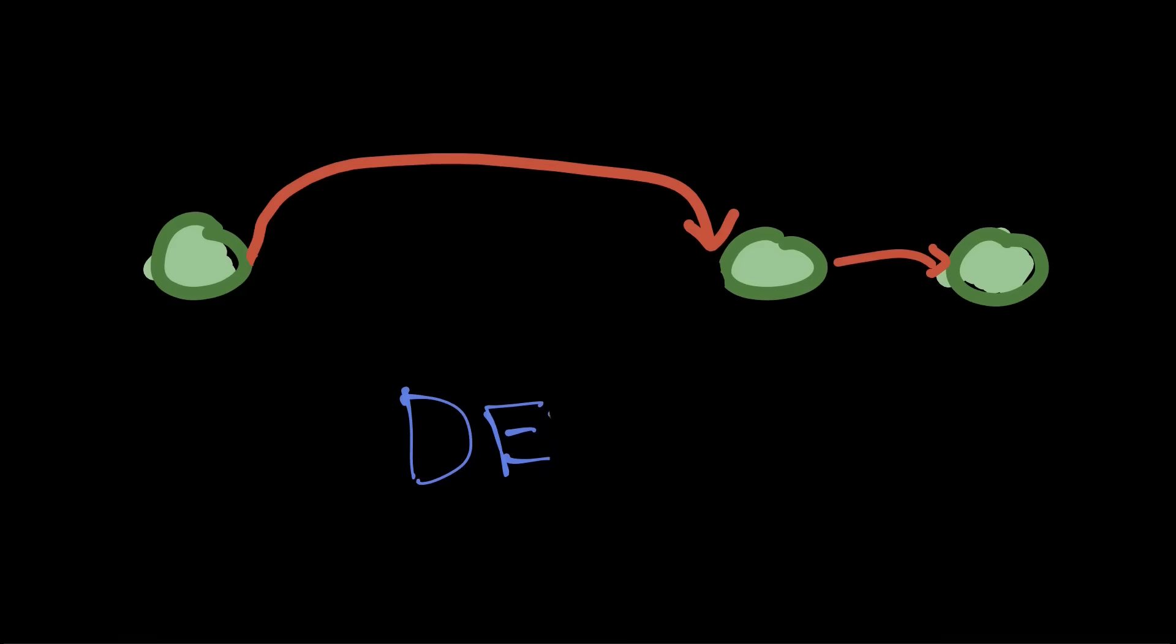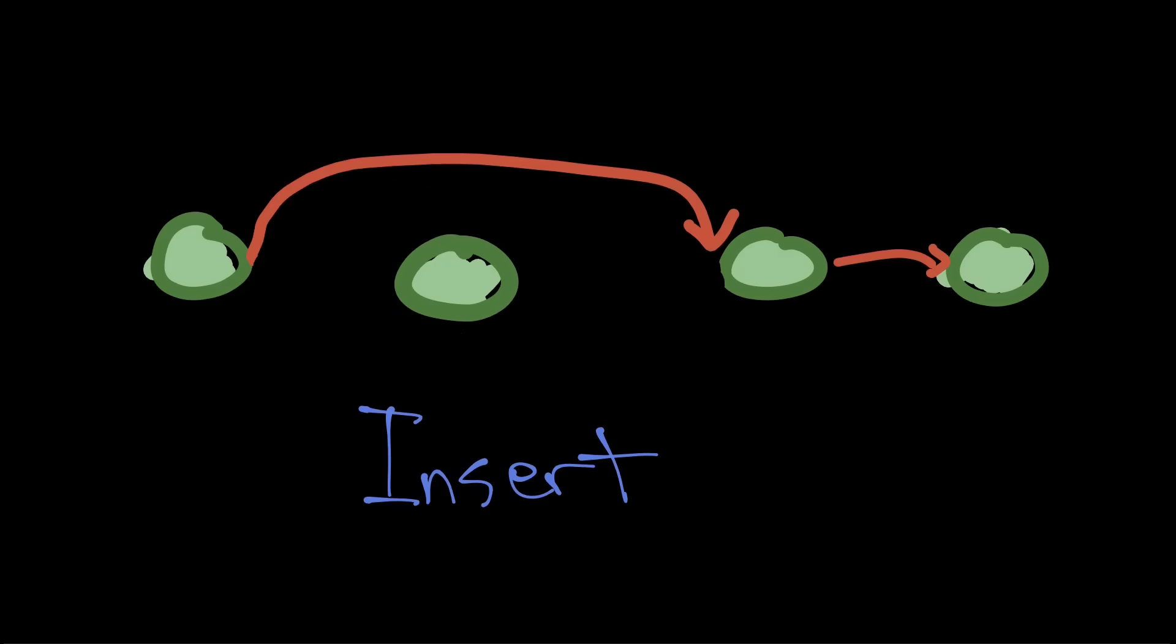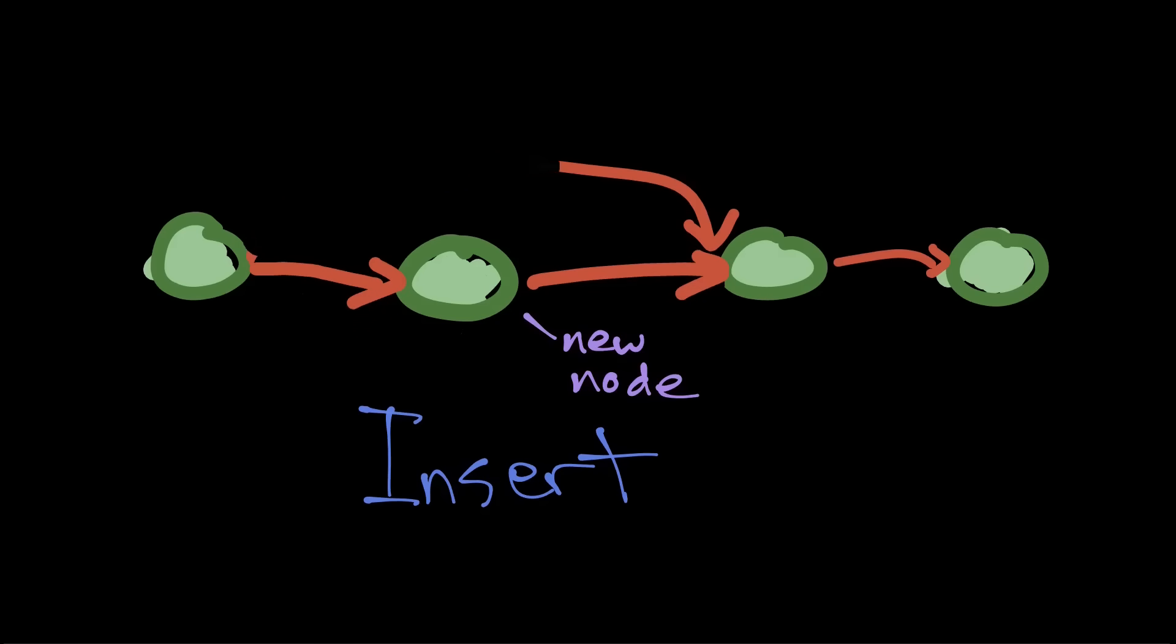Adding a new node anywhere in the list is the same deal, but backwards. To add one, you allocate a new node, change the previous node's next pointer to point to your new node, and then change your new node's next to the next node in the chain. That description might be a little confusing, but the picture should be pretty simple.